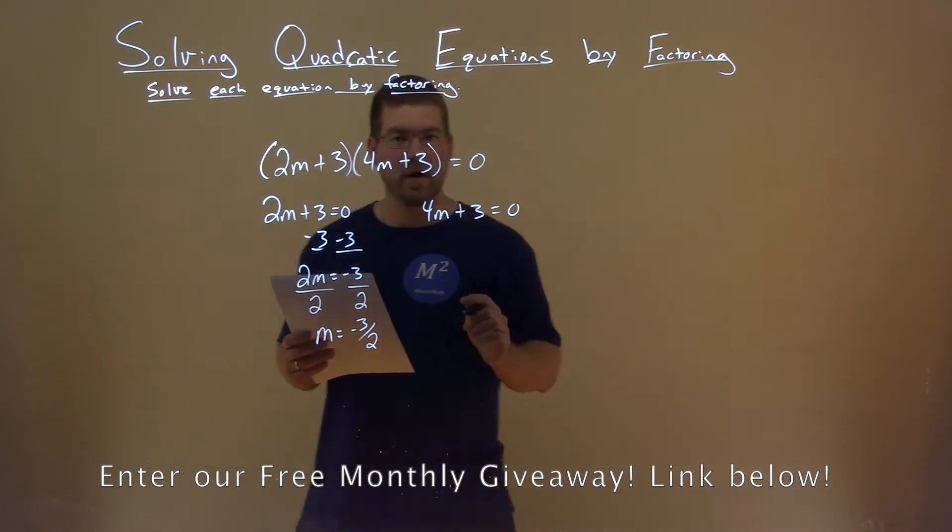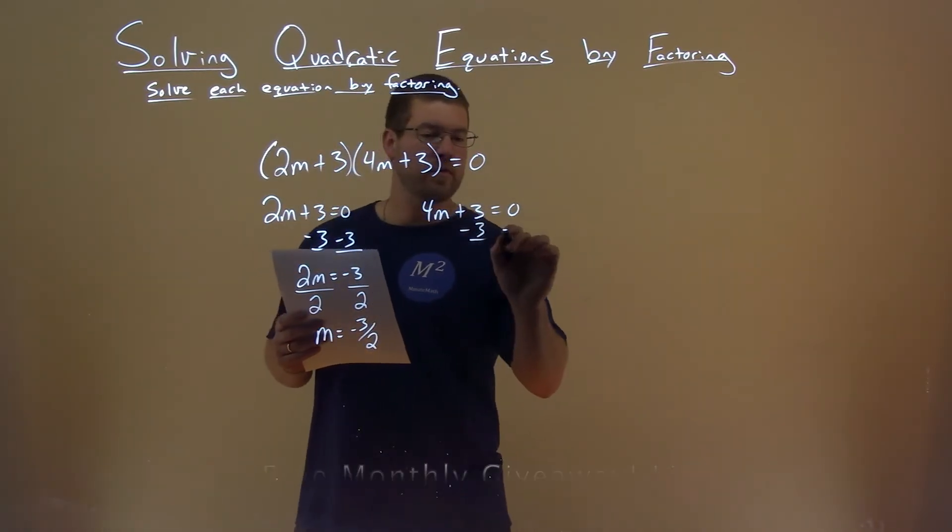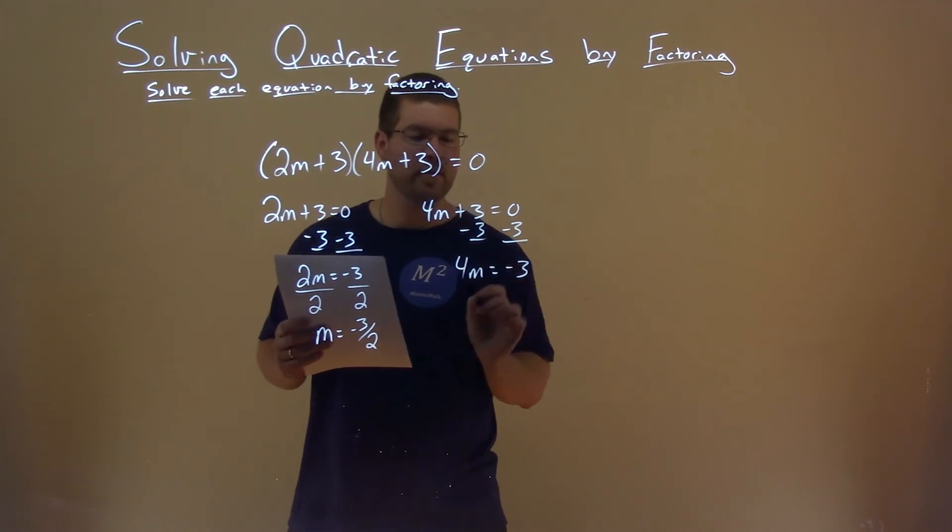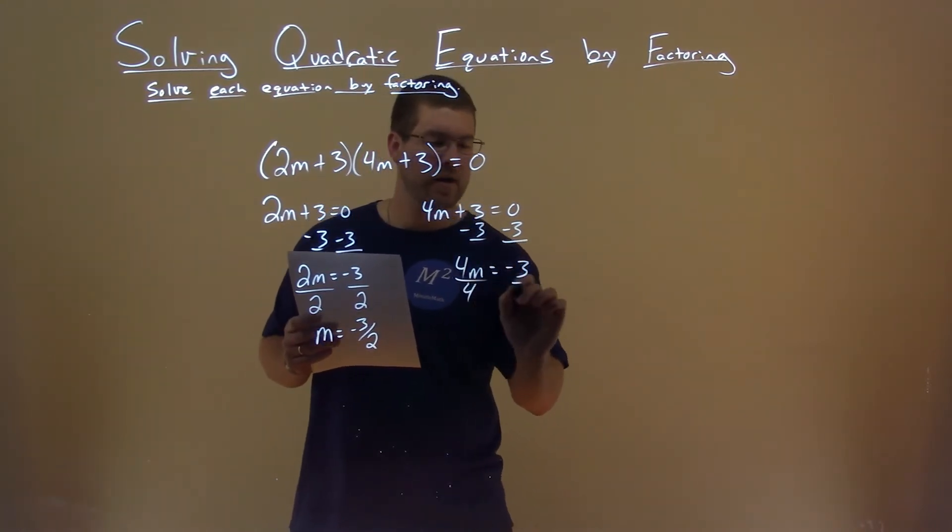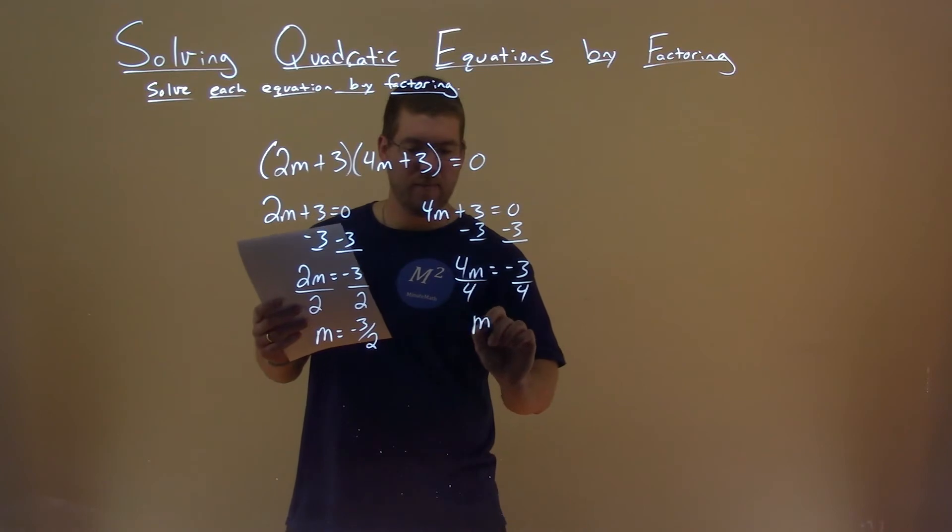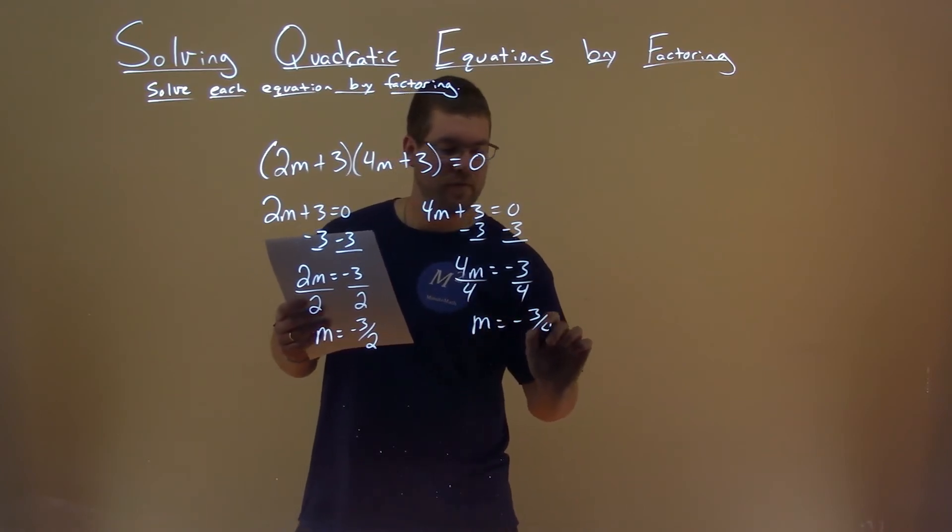Let's do the same thing with the right one. Minus 3 from both sides, and 4m equals negative 3. Divide both sides by 4, and m equals negative 3 fourths.